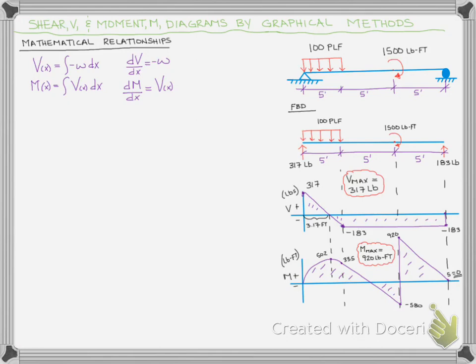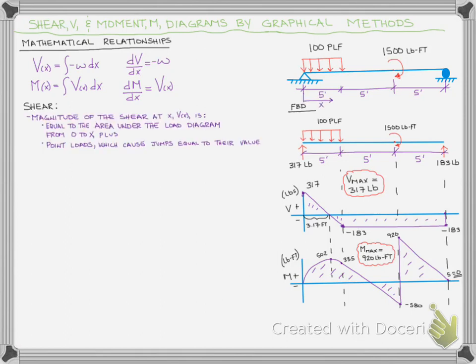Let's start with the shear. What we're really saying is that if we want to know the magnitude of the shear at some point X — I've labeled an X distance starting at the pin as a zero reference — it's just equal to the area under the load diagram. If I know the equation of the curve for the load, I can integrate that. Or if it's a rectangle like that 100 pounds per lineal foot, I can just find the area as height times width.